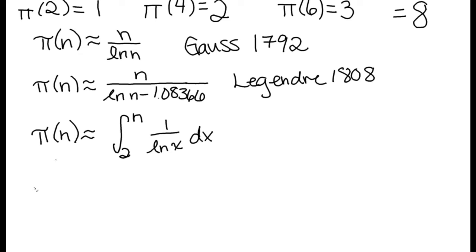And Ramanujan believed that this was what's called an upper bound. So he believed that the number of primes was always smaller than this. It would never get any bigger.